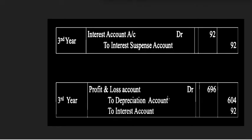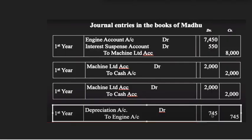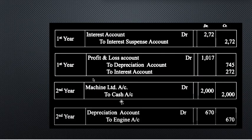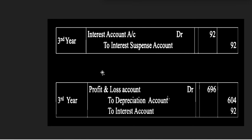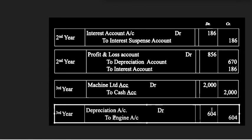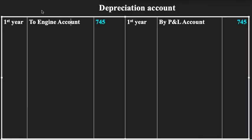The last account is the Depreciation Account. We are depreciating the engine each year. For the first year: To Engine Account 745 rupees on the debit side; By Profit and Loss Account 745 rupees on the credit side — the account is closed for year one.